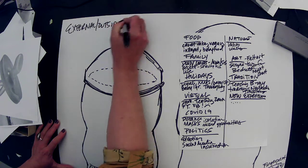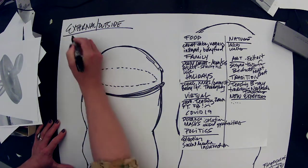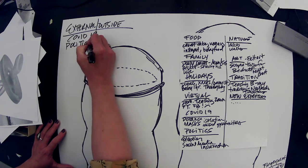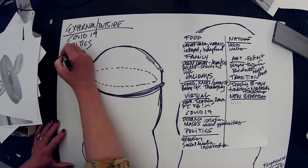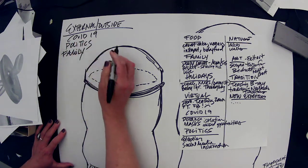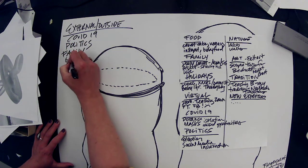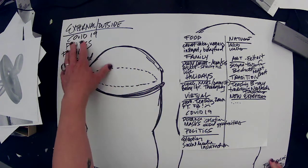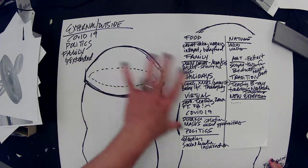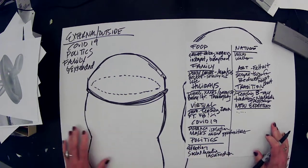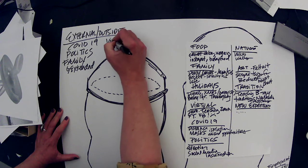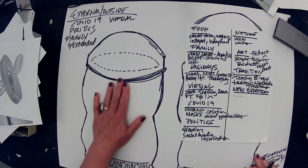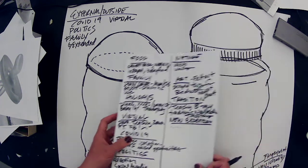External for outside. COVID, politics, maybe some family stuff like my extended family. These are things that typically we don't really have a lot of control over, but they're happening to us, they're happening around us and they affect us, right? Virtual.